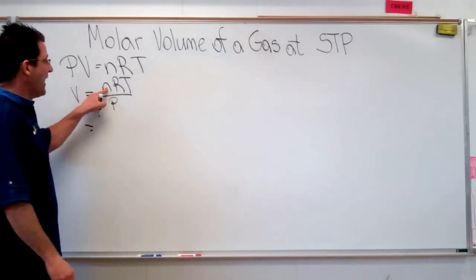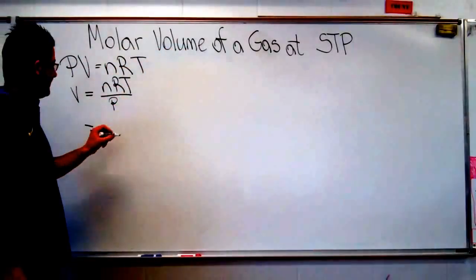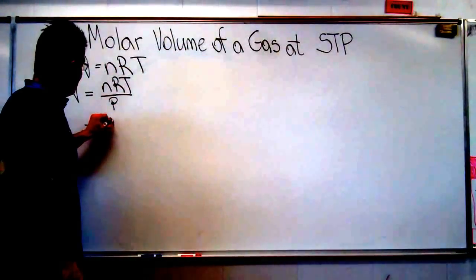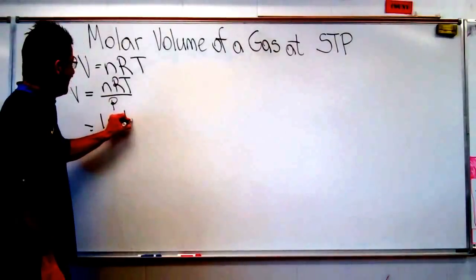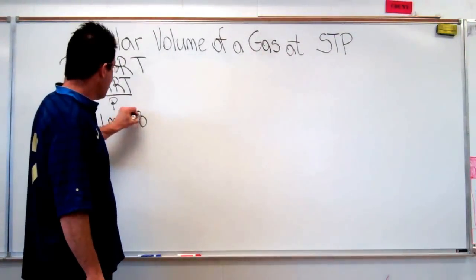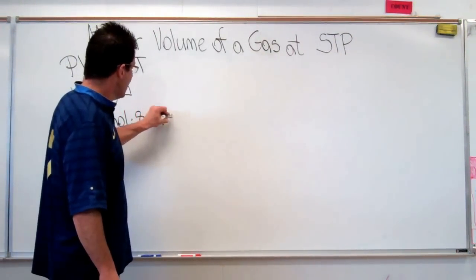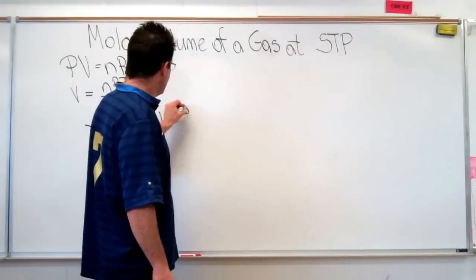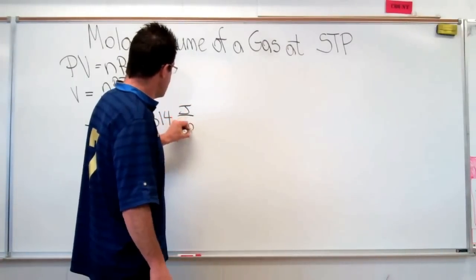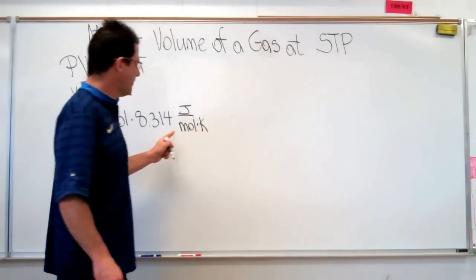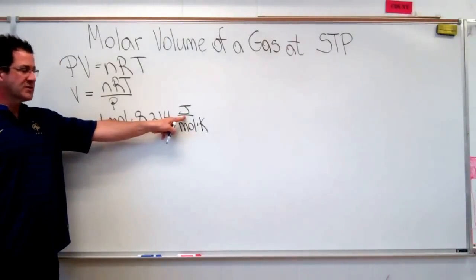You can plug the numbers in. This is for one mole of gas at standard temperature and pressure. We're going to go with one mole. R is the gas constant, 8.314. And the units on the gas constant are joules, mole, and Kelvin.